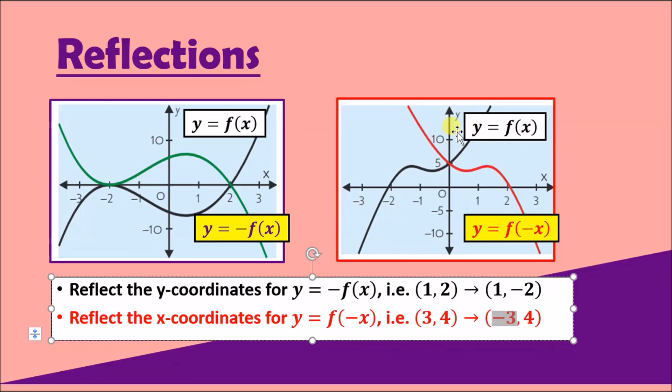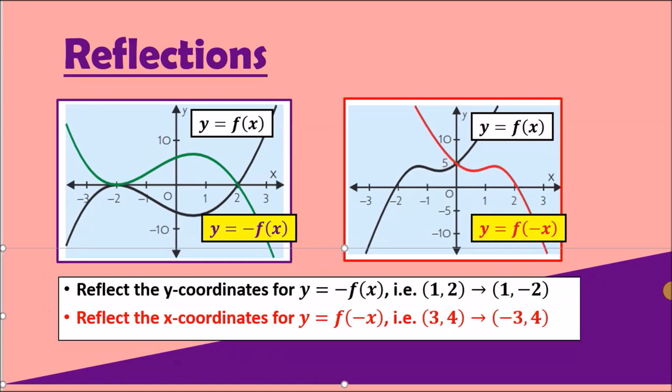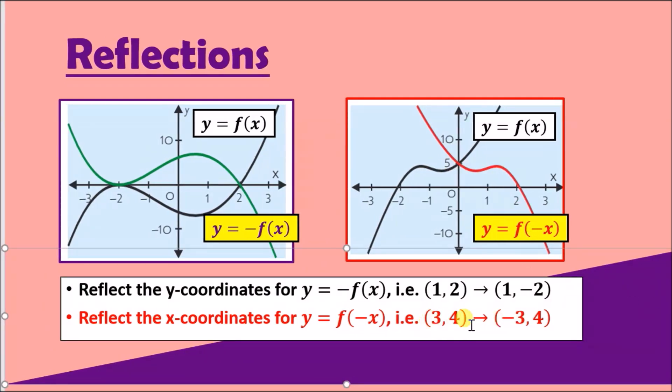Note that f(−x) flips the graph on the y-axis. My tip is always flip the coordinates and the graph should fix itself up.